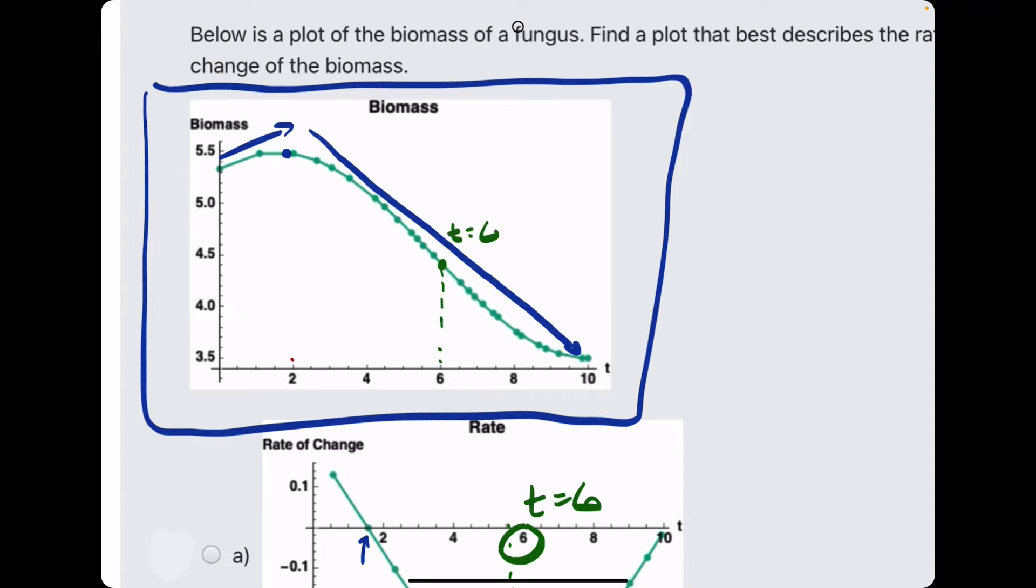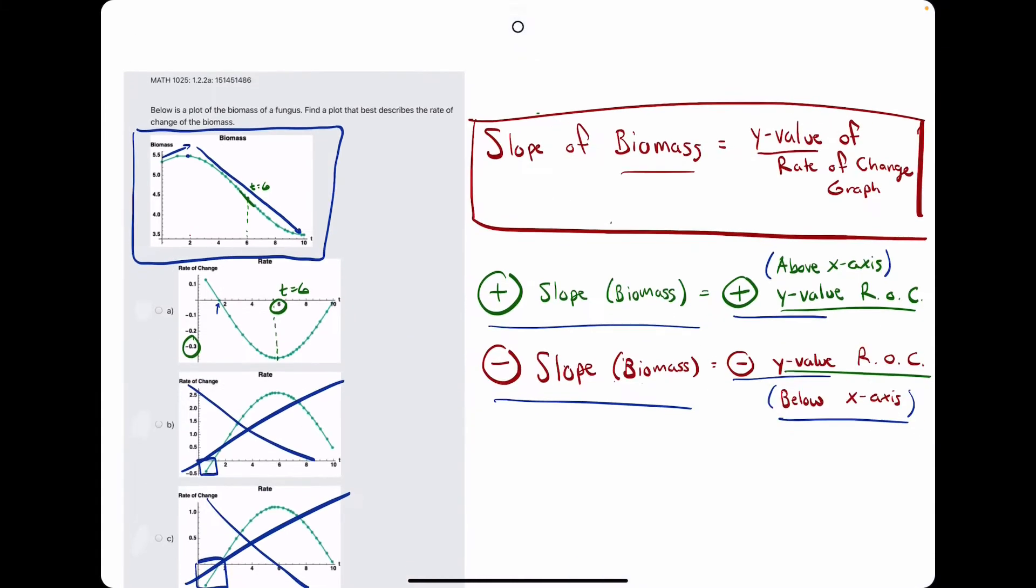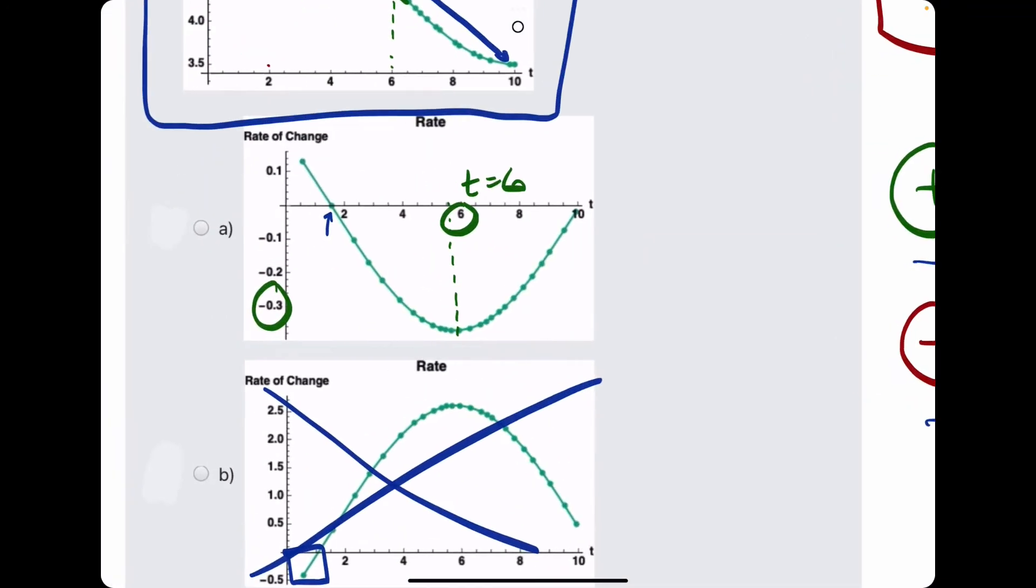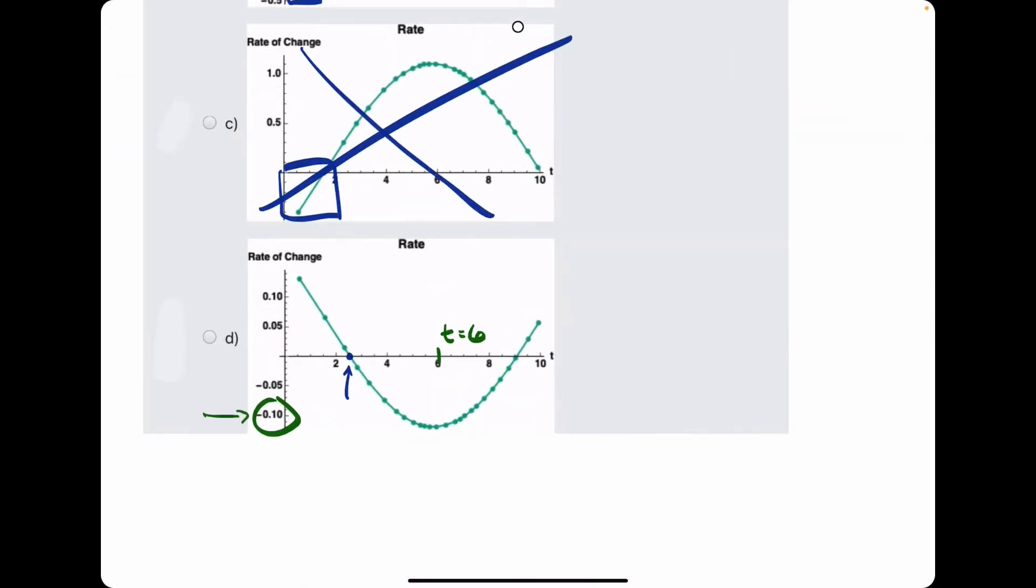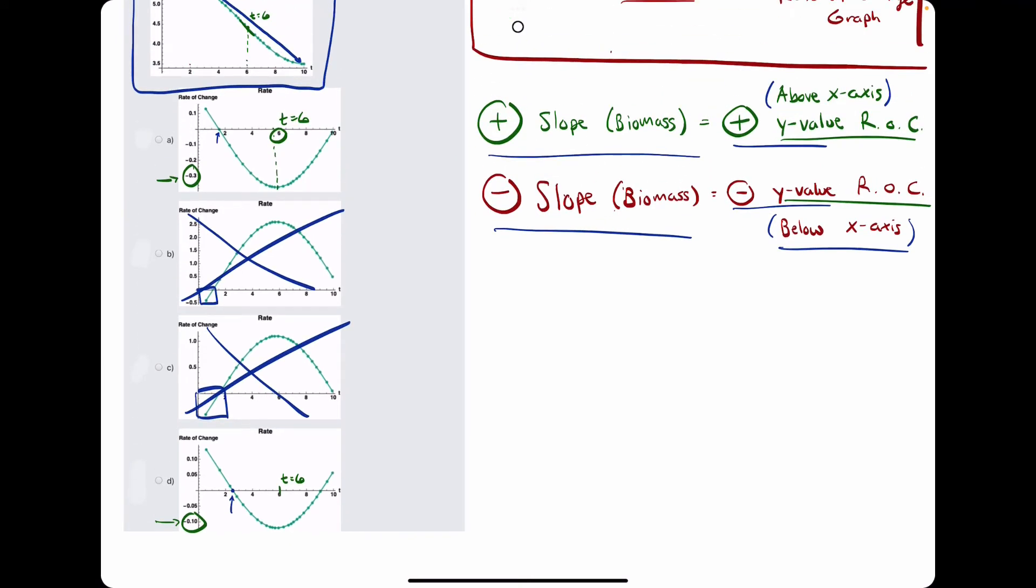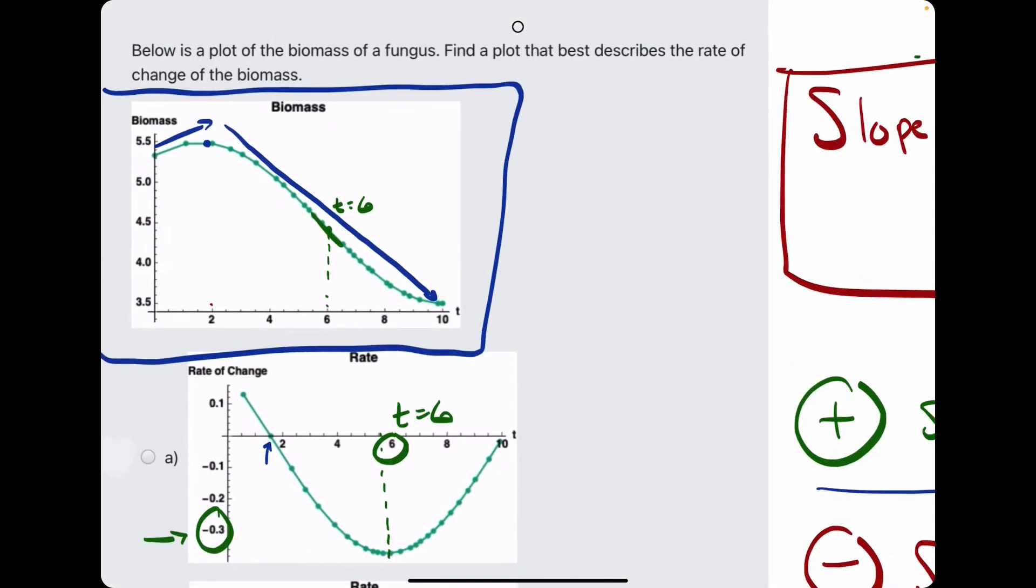If we can estimate the slope of that function at time 6, we can get an idea of what the y value of the rate of change graph should be at time 6. So, let's not waste any more time.